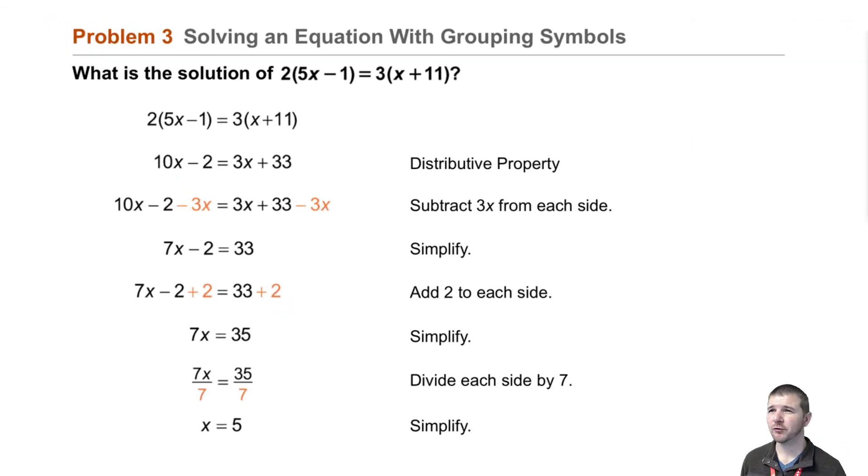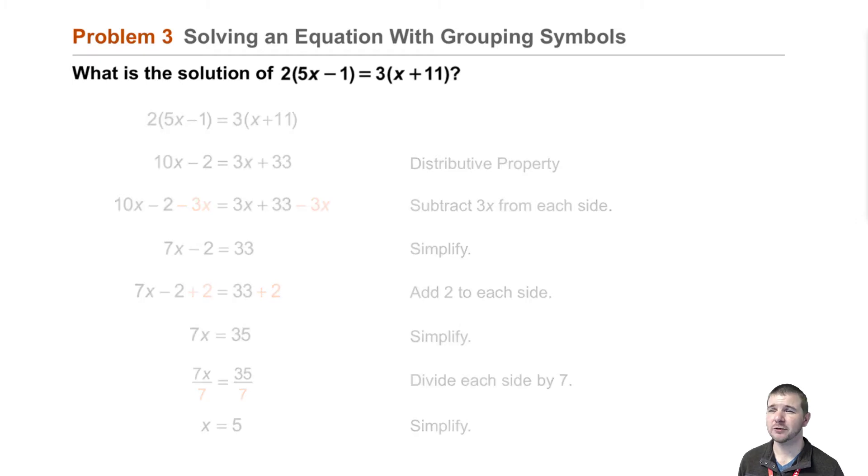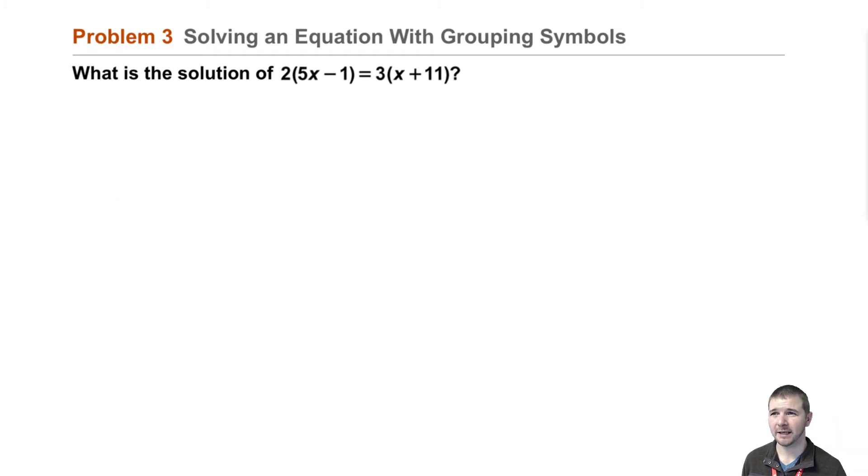Problem three: Solving an equation with grouping symbols. What is the solution of 2(5x - 1) = 3(x + 11)? Well, rewrite the equation and then use the distributive property to get a simpler form or to eliminate those grouping symbols.